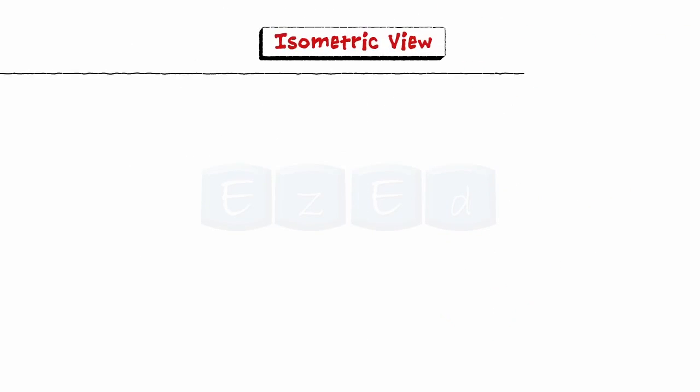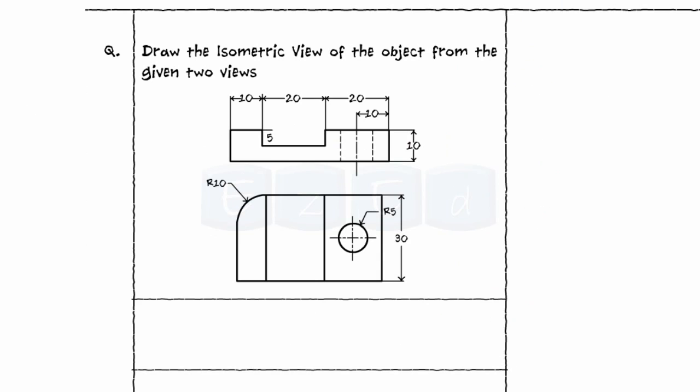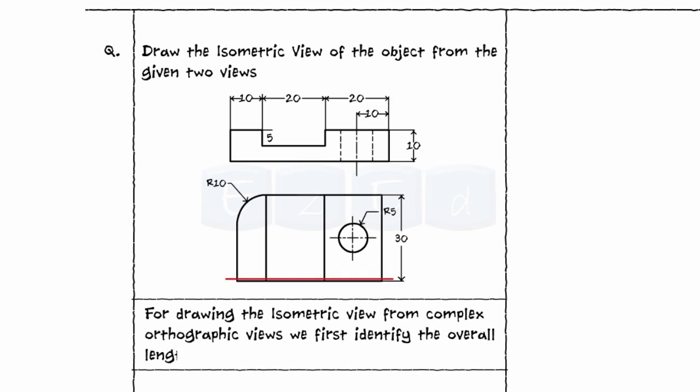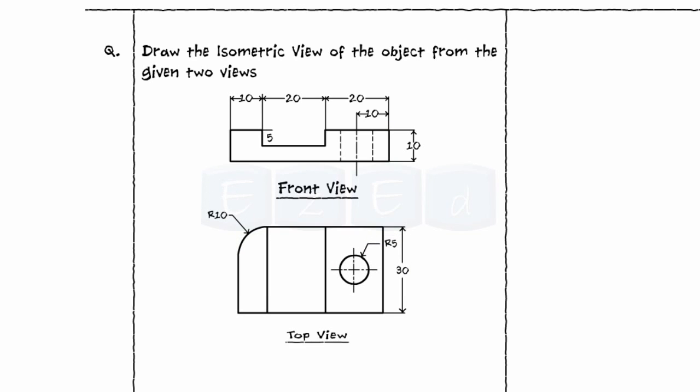Next let us draw isometric view of an object. Draw the isometric view of the object from the given 2 views. For drawing the isometric view from complex orthographic views, we first identify the overall length, breadth and the height of the object. The given 2 views are the front view and the top view of the object.